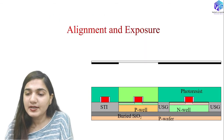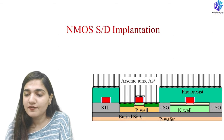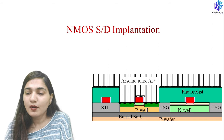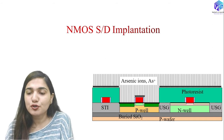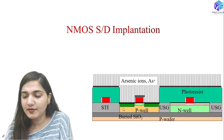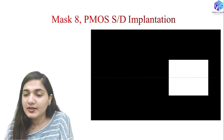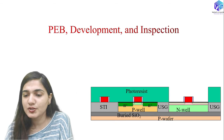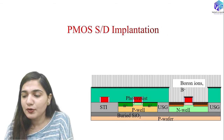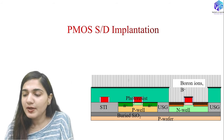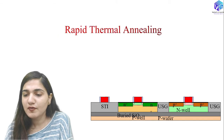After photoresist coating and baking, mask 7 is used for NMOS source and drain implantation. After alignment, exposure, development, and inspection, arsenic ions are implanted to form the NMOS source and drain. After stripping the photoresist, the same process forms the PMOS source and drain using boron ions, following photoresist coating, baking, alignment, exposure, development, and inspection.